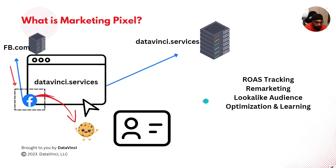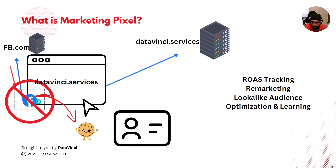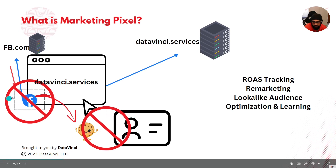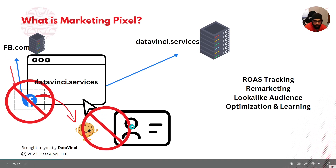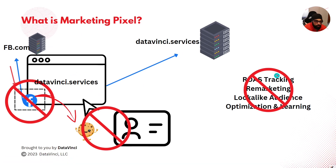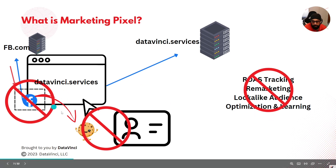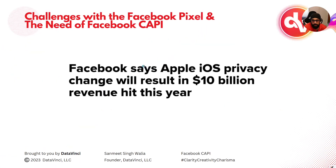The pixel also enables lookalike audiences and optimization through learning. Now if you block this pixel through ad blockers or any other mechanism, that would prevent identification of the user on the website. If there is no pixel, there is no response to the marketing server and no callback — so how would the marketing server drop a cookie or identify who the visitor is? And if you cannot track what's happening on the website, how would you do ROAS tracking, remarketing, lookalike audiences, or any kind of optimization?